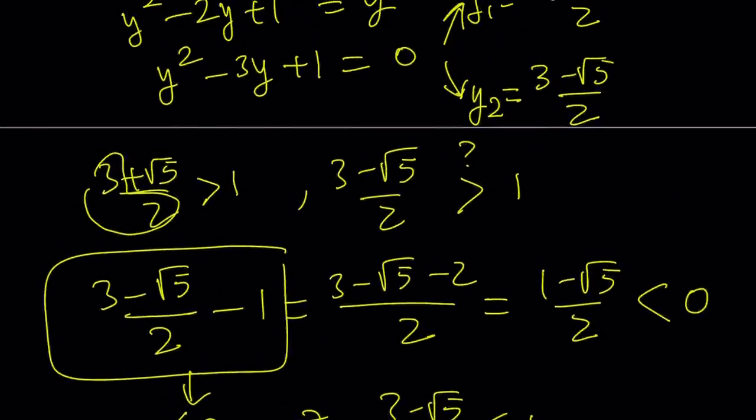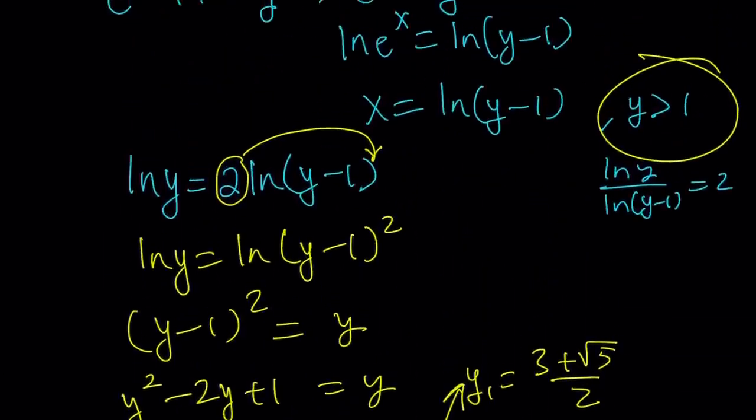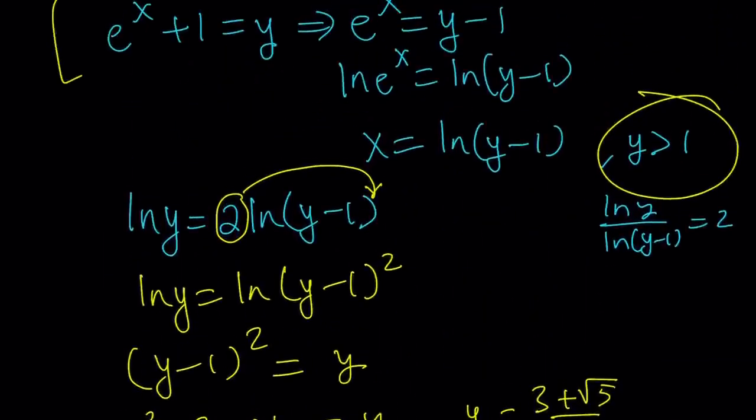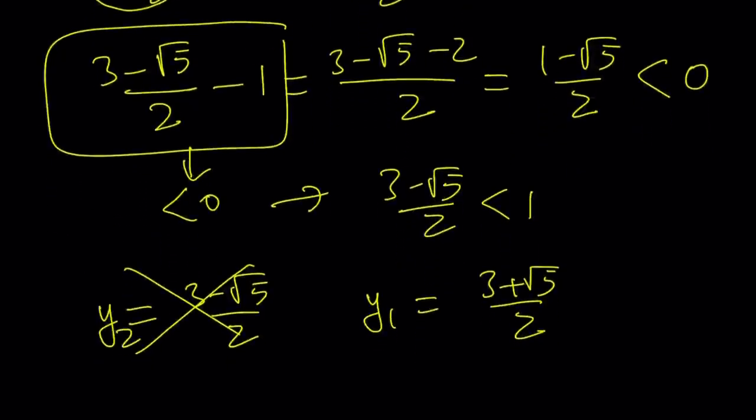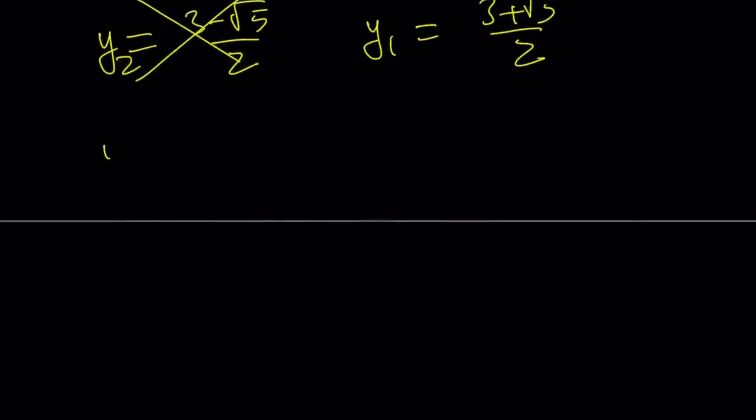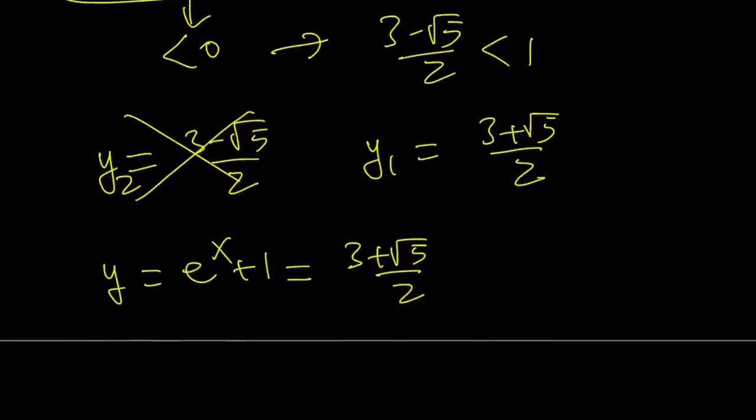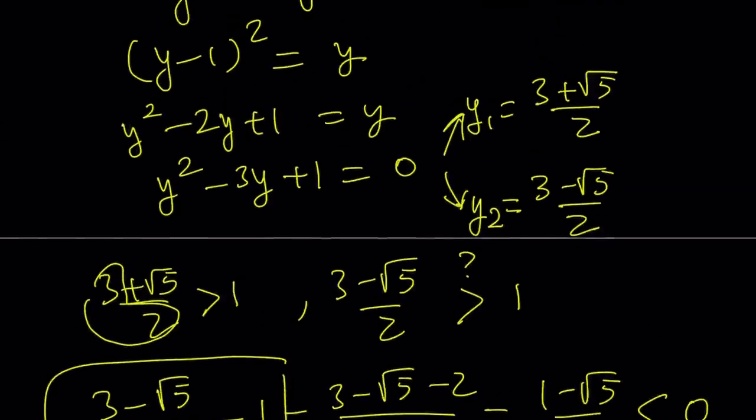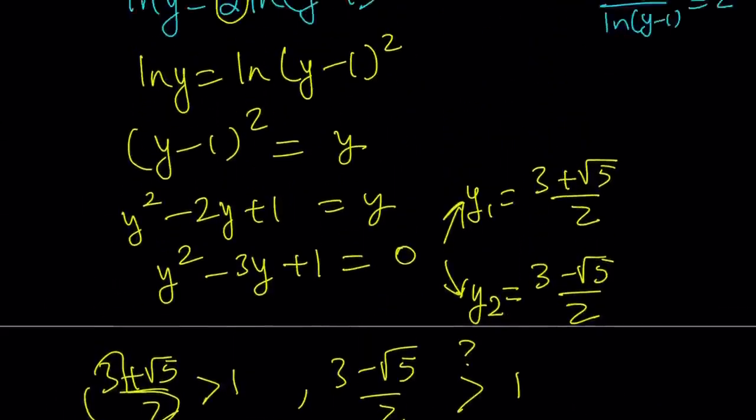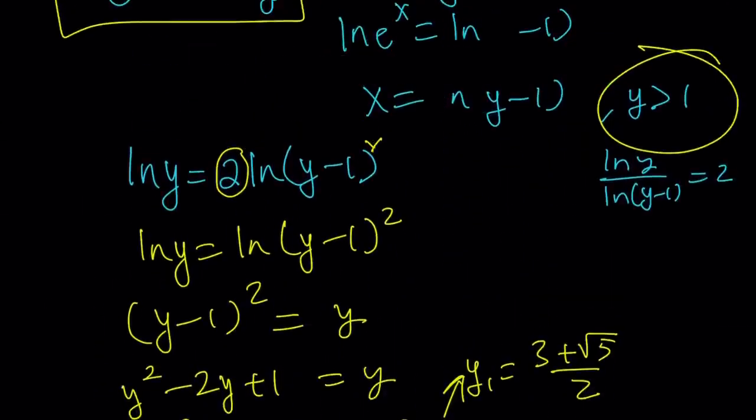But y sub 1 does, and it's (3 + √5)/2. Now, remember, y is equal to what? y is equal to e^x + 1. So, let's go ahead and back substitute. y is equal to e^x + 1, and that is equal to (3 + √5)/2. Okay. What am I going to do? Well, here's another thing, though. I noticed you can do it this way, but there's a faster way to do it, and it is by using the x values directly, because remember, when we substituted, we got x = ln(y - 1).